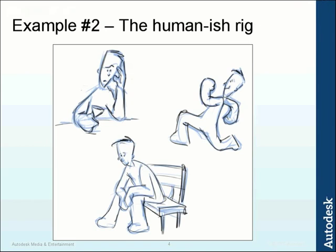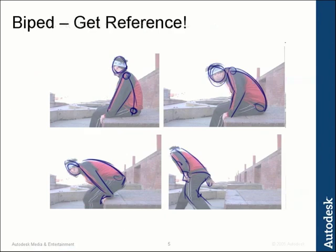Obviously sketching isn't the best way to figure out what types of motions you're going to need, because maybe you're not a great artist, or maybe sketching only shows one pose and you want to actually look at things in motion to really understand what's going to happen. So it's very important to go out and get reference. A lot of people hate getting up in front of a camera and dancing around looking like an idiot, but you've got to do it.